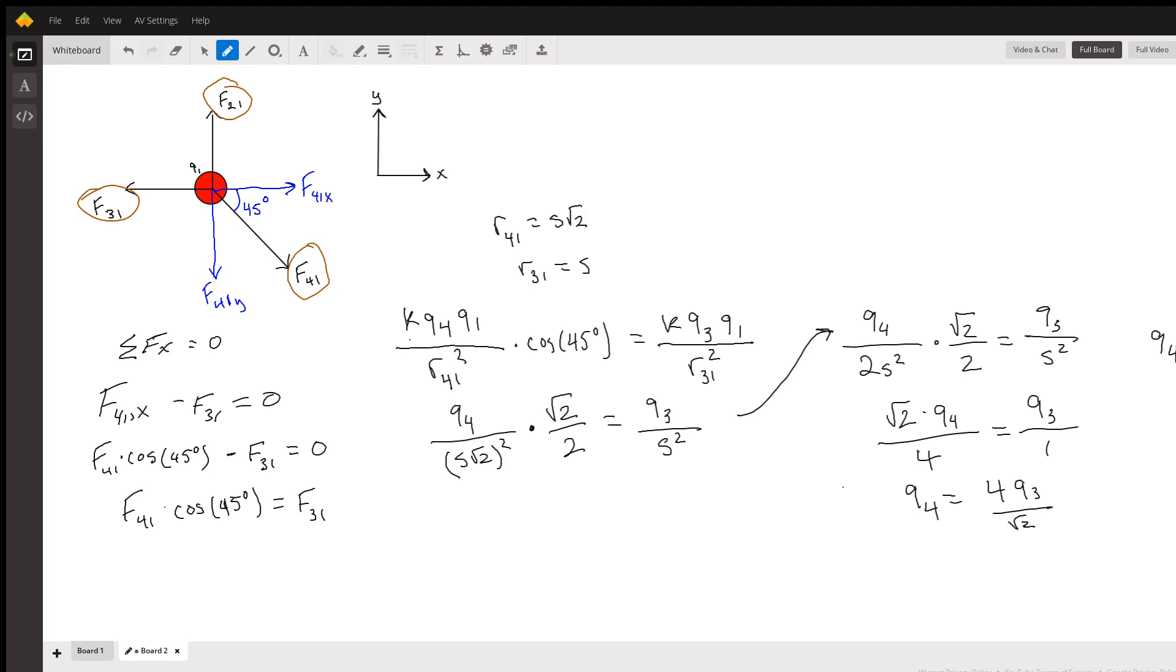We know that the angle between the net force four-on-one and the x component will be 45 degrees because it's a square. Half of the angle in the corner of a square, which is 90 degrees, is 45 degrees.